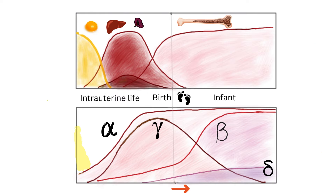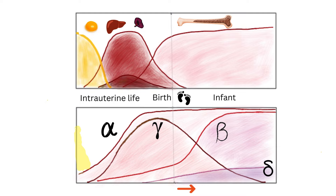This graph shows that in early life, alpha and gamma chains are produced, with the decline of gamma chains after birth. Gamma chains are the ones used for hemoglobin F, the fetal hemoglobin needed in utero. New beta chains rise rapidly after birth to replace gamma as the main non-alpha globin chain, forming hemoglobin A. Delta chains rise slowly but remain in the minority, and these non-alpha globin chains join with alpha chains to form hemoglobin A2.